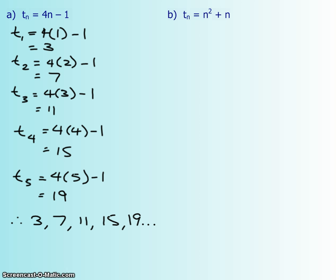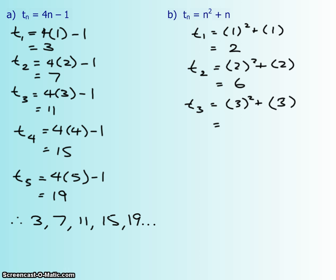So let's try that again with the next one. t₁ is 1 squared plus 1, which is just 2. Your second term has a value of 6. Your third term, so just notice that you're subbing in whatever your term number is into your n's. And that is 9 plus... 3 squared plus 3 is 12.